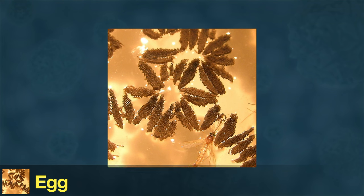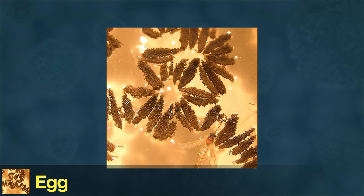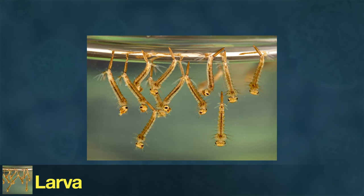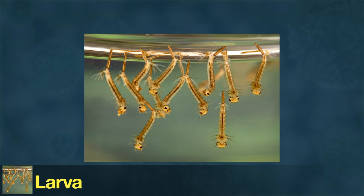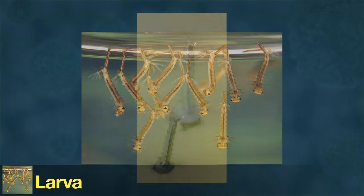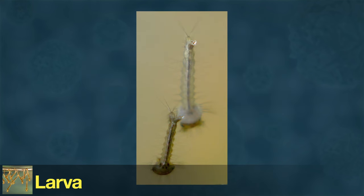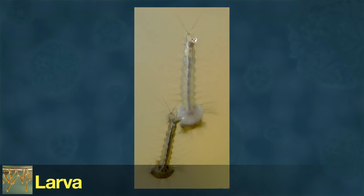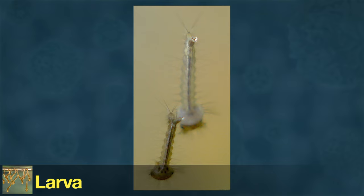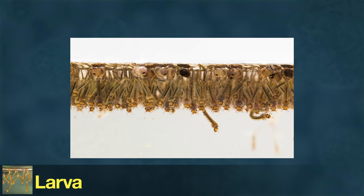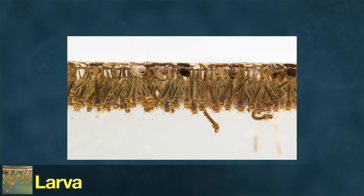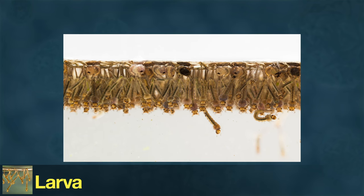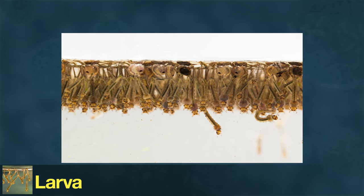Once a mosquito hatches from its egg, it enters the second stage of its life cycle—the larva. The larva lives underwater and eats algae, plankton, and other microorganisms. Larvae need air to breathe, and the larvae of many mosquito species have a breathing tube by their tail called a siphon. These larvae hang upside down and stick their siphons above the water to get air. A mosquito stays as a larva for 4 to 14 days, depending on temperature and species.